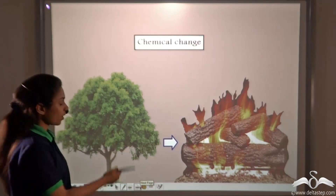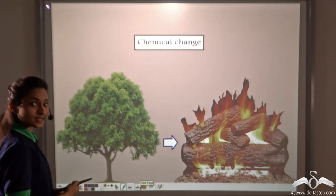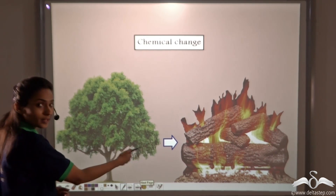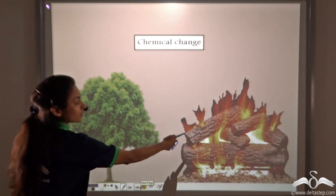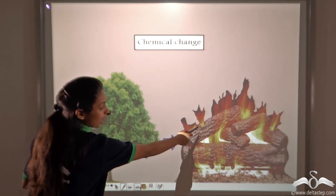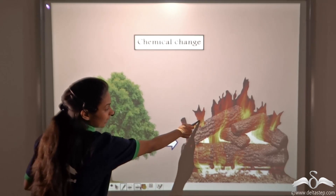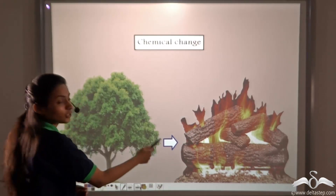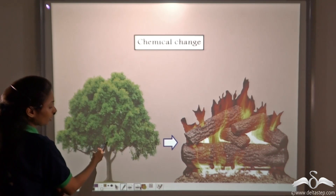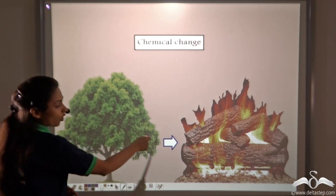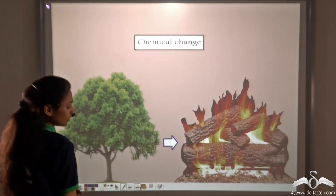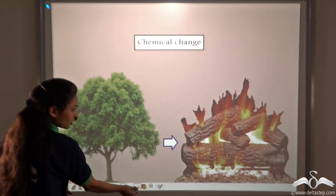However, burning of wood is a chemical change because the tree does not remain the same tree anymore. New substances are formed here — heat, light, and carbon dioxide are the new substances formed — and the chemical composition of the tree changes. It changes into a new one. So this is a chemical change.